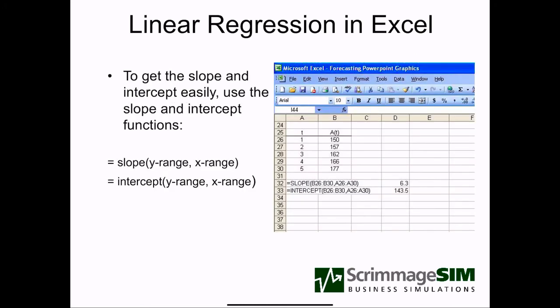Fortunately, Excel comes with a slope and intercept function. So to get the slope for a set of data, you just type equals slope. Give the range of the y values, then the range of the x values. So in this example, here's the range of the y values. Here's the range of the x values. So you can see, in this example, if we type equals slope for b26 to b30, comma a26 to a30, we're going to get the slope value, same as with the regression equation. Similarly, the intercept formula works the same way. So we can get the intercept value very easily. And so these functions are very useful for doing simple forecasting.